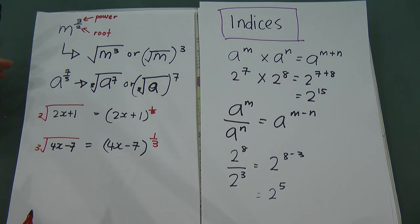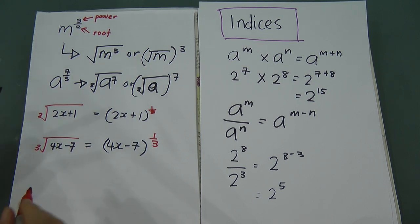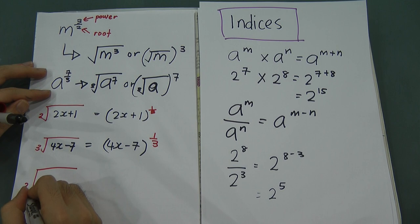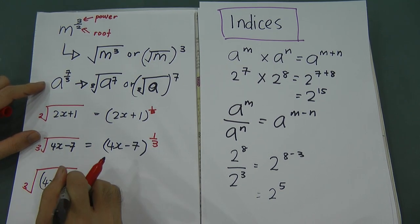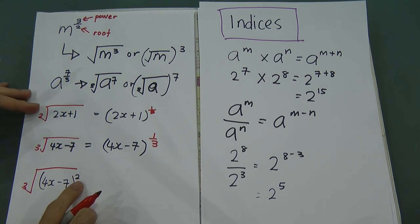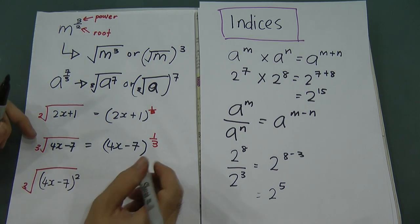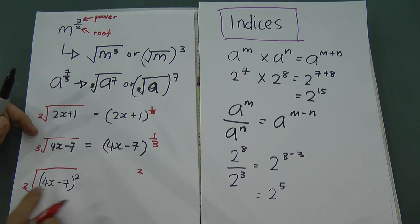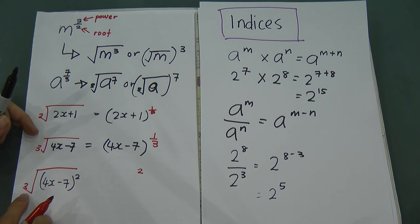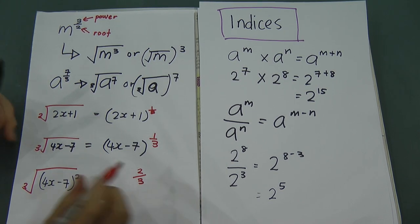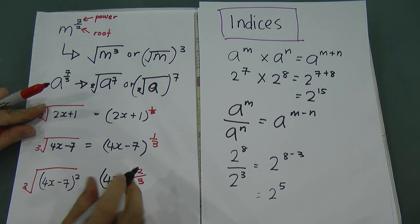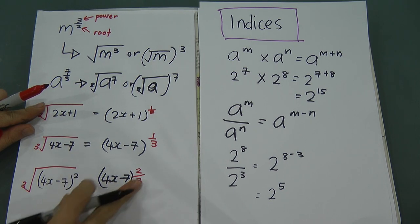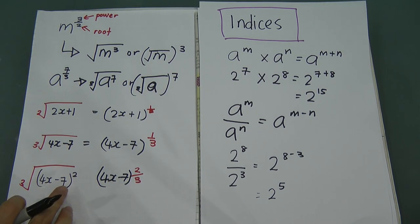If you see the cube root of (4x minus 7) squared, remember: 2 goes on top because it's the power, and 3 goes on the bottom because it's the root. Therefore this equals (4x minus 7) to the power of 2 over 3.